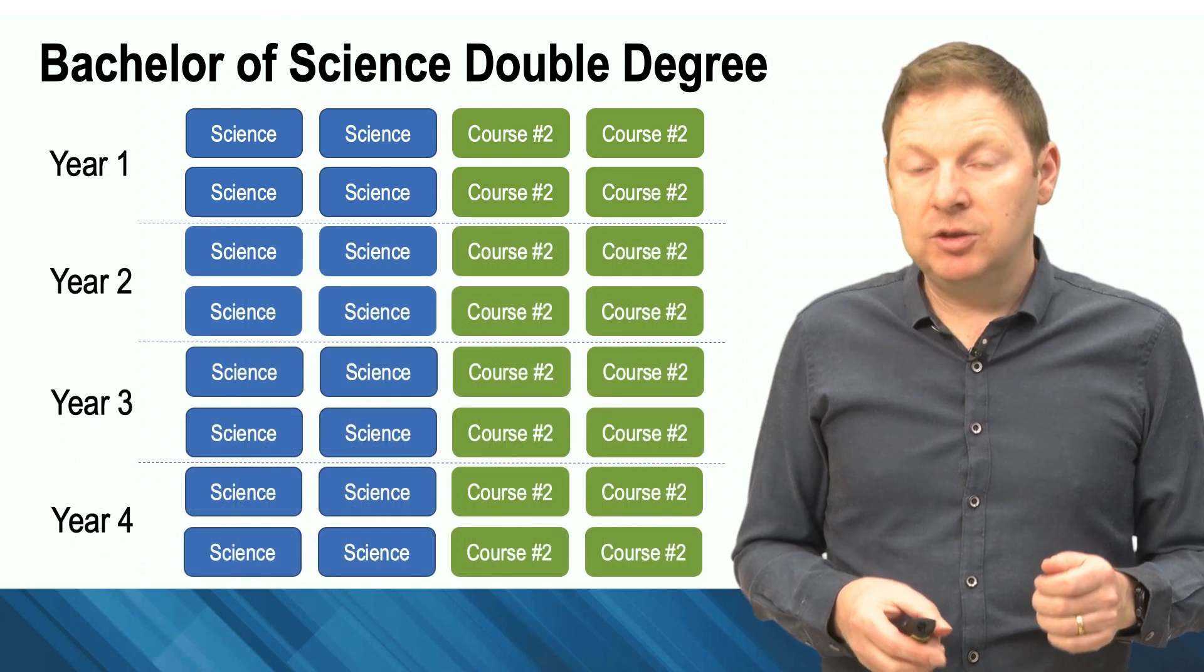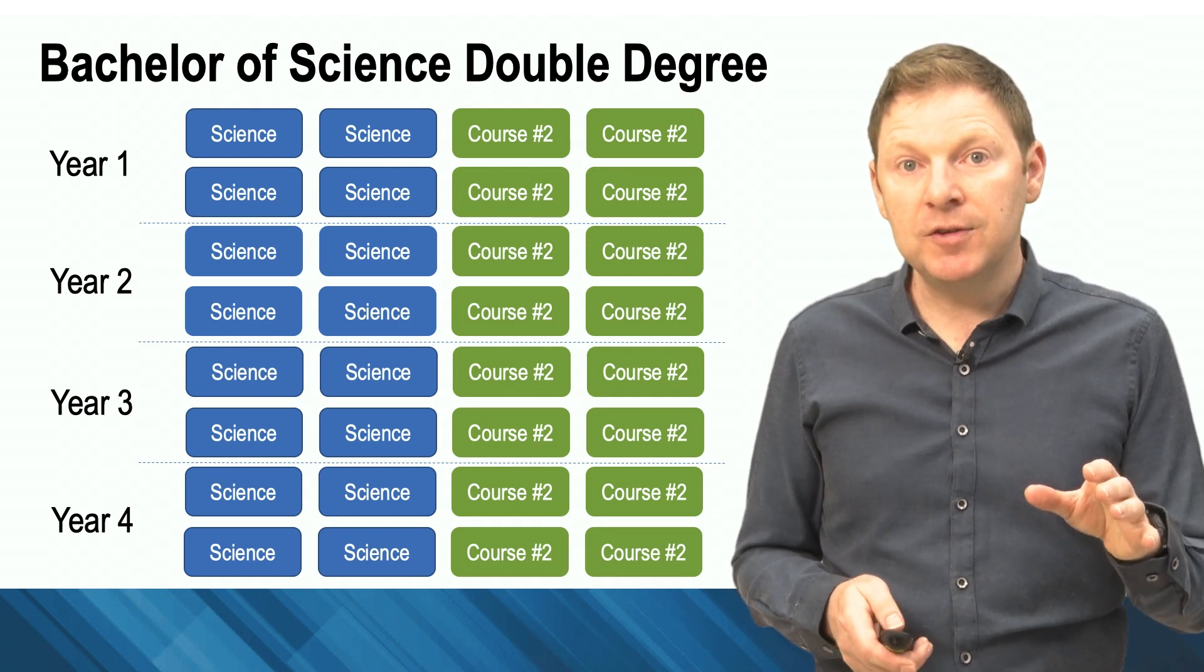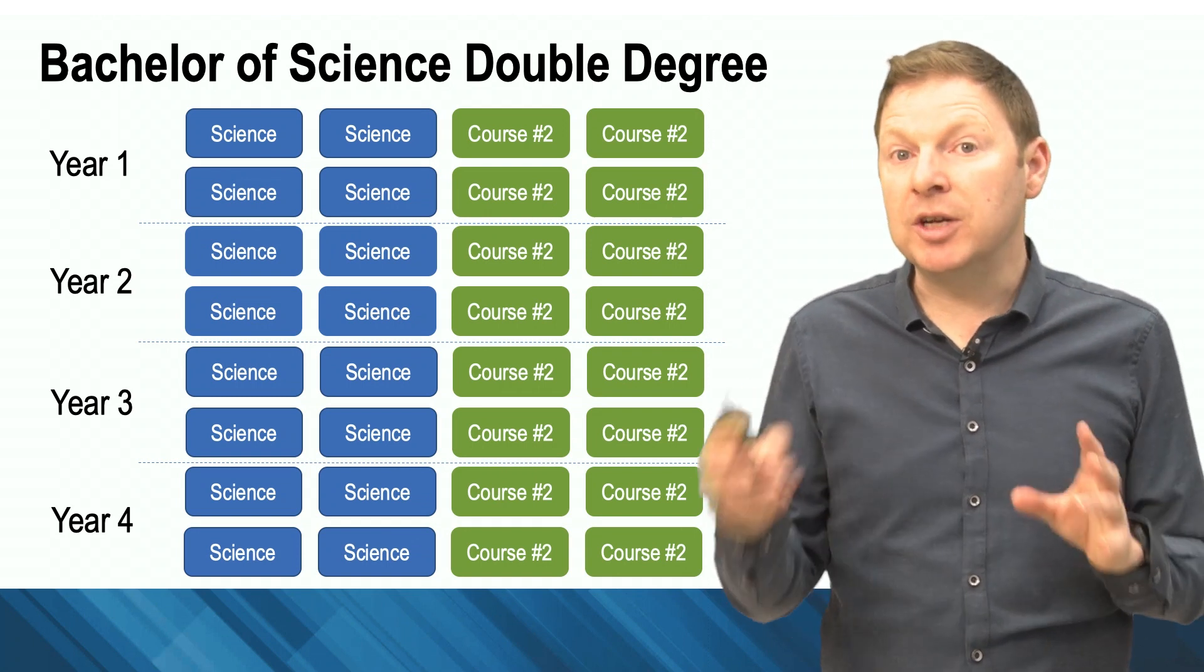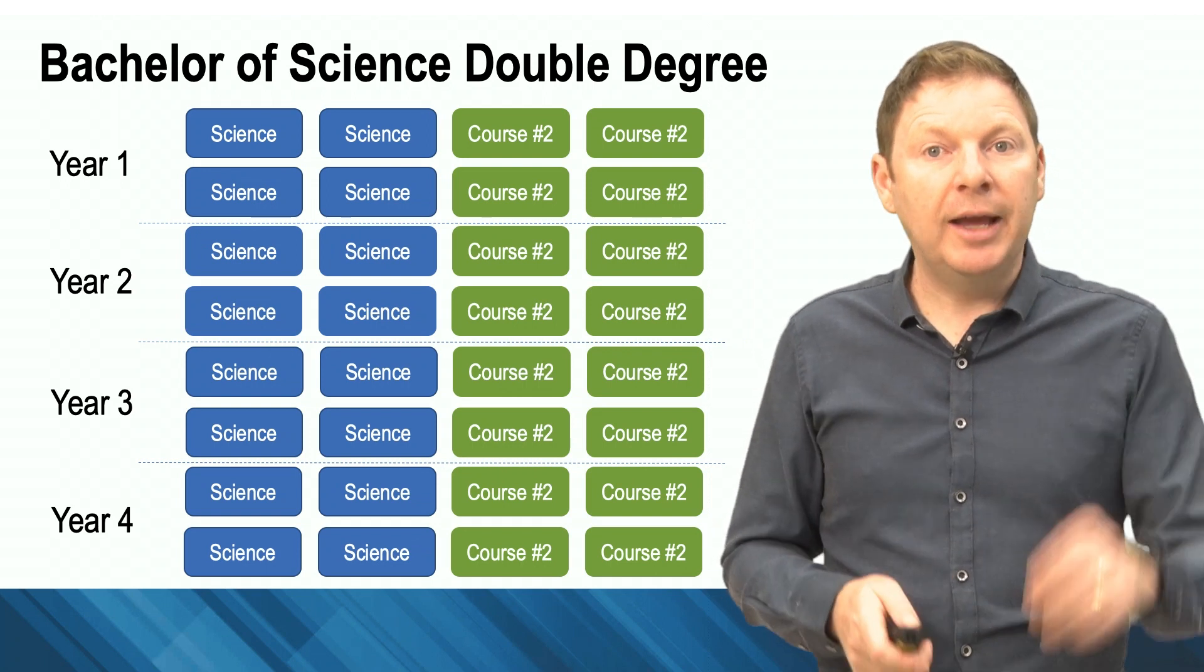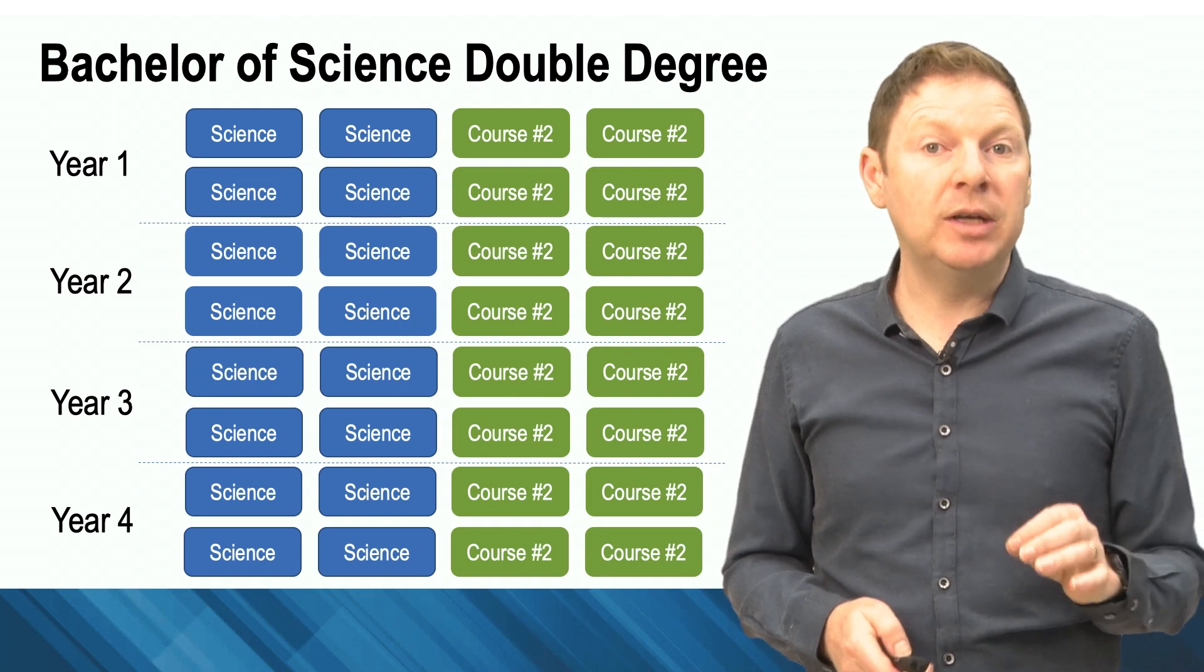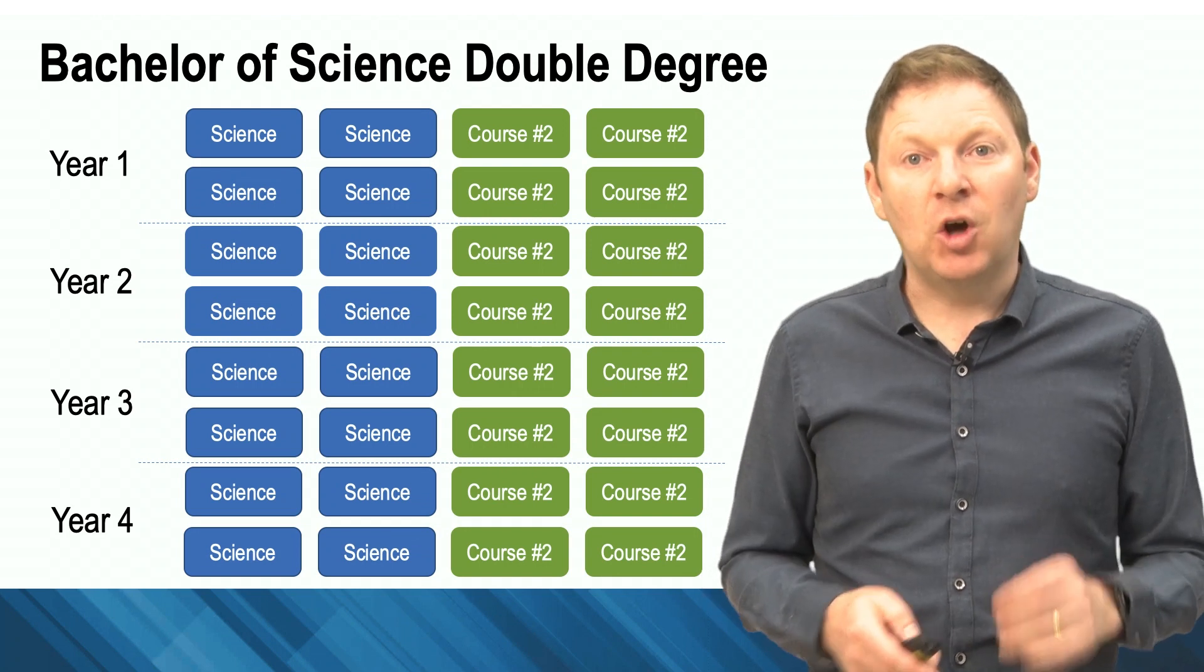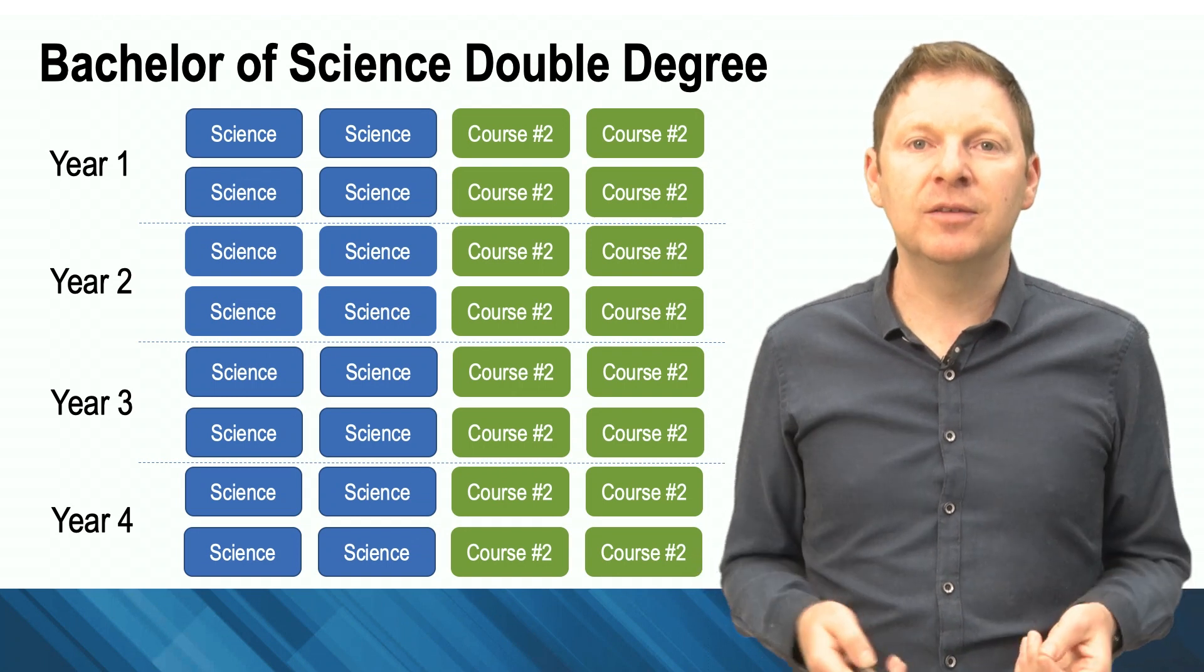So after four years, your course will probably look something like this. Now there are some differences. Science education double degrees, for example, have some idiosyncrasies. Science engineering double degrees, again, there are some distinct differences. It's really important that you go to the handbook, which I'm going to talk about in a moment, to have a look at each of the different course maps to make sure yours is perfect. But what they all have in common is, on the science side, you will complete 16 units by the end of your course.